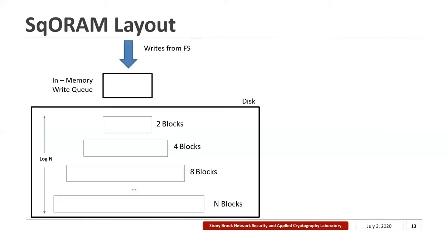The SQORAM layout looks like this. The disk is logically partitioned into buffers of exponentially increasing sizes. Each of these buffers can be considered to be an append log. The top-level buffer has a capacity of two blocks, the next level has a capacity of four blocks, and the last level has a capacity of holding all n blocks in the database. In this way, the disk is partitioned into log-n such buffers.